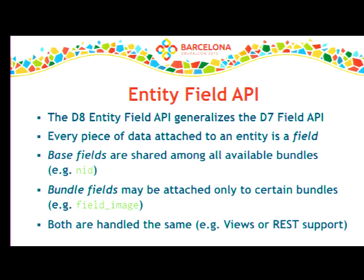We still have a distinction roughly mapping to the properties and fields distinction in D7, but slightly different. We have base fields — more or less what we considered properties in D7, like the node ID — that are shared across all bundles of an entity type. Then we have bundle fields that may be attached to only certain bundles, which is usually the case for fields created through the field UI. A field_body is shared across all entity types usually, but field_image is attached only to certain bundles — these are more flexible and not required because there is no business logic built upon them.